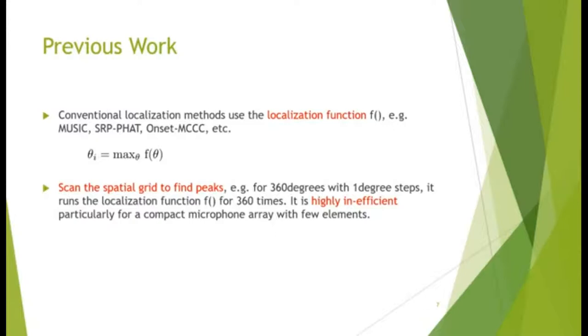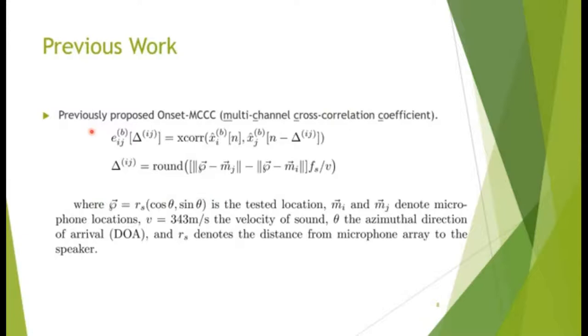To be more specific, as shown in the equations, the previously proposed onset MCCC calculates the time delays across spatial grid, then calculates the corresponding cross-correlation coefficients. Here, rho denotes the tested location, Mi and Mj are microphone locations, V is the velocity of sound, theta is the DOA, RS is the distance from microphone array to the speaker.